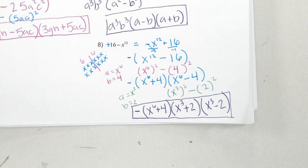That's your answer. If you still have a perfect square minus a perfect square, you have to keep going.